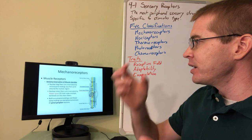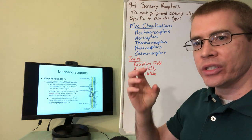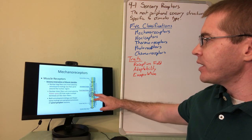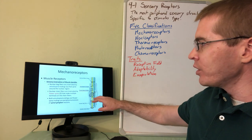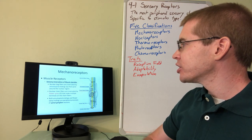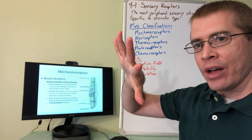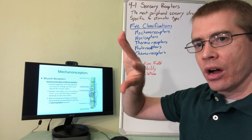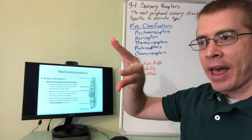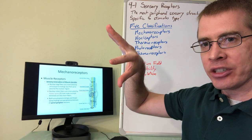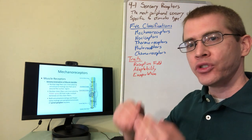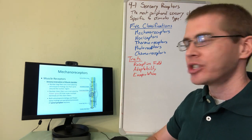These intrafusal fibers respond to changes in muscle length. The annulospiral endings are spring-like and detect rapid changes in the length of the nuclear bag fibers. The flower spray endings, classified as type 2 fibers, are located primarily on the nuclear chain fibers and detect the static stretch — not so much the active change, but how far apart those points are spread. Together these two fiber types give you the rate of change and the static stretch of the muscle.